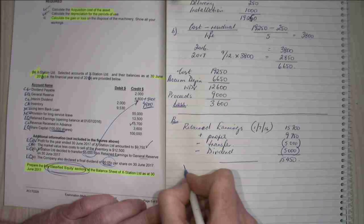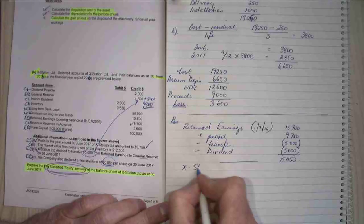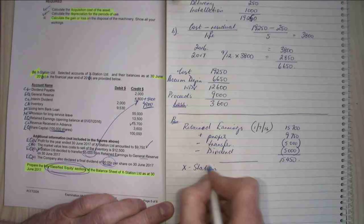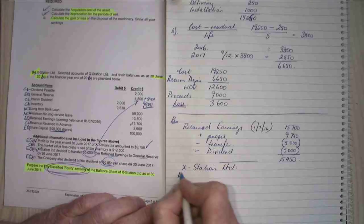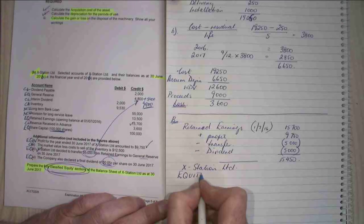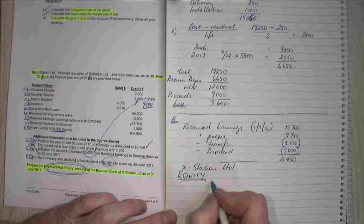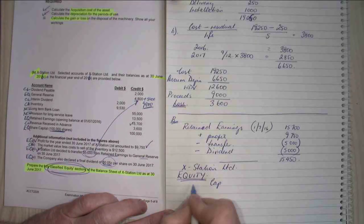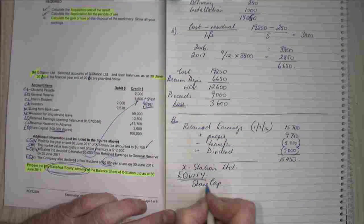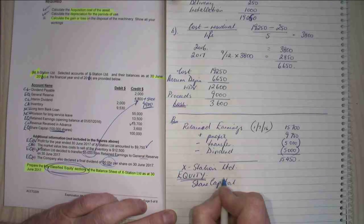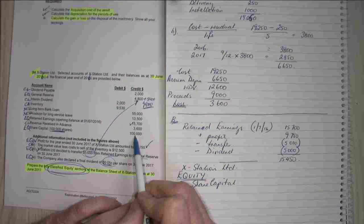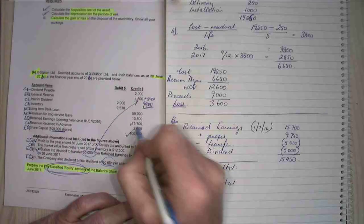My X station Limited, my equity section of my balance sheet is what I'm preparing. And when we prepare it we put capital or share capital first. And my share capital is $100,000. So I'm going to tick that one off.